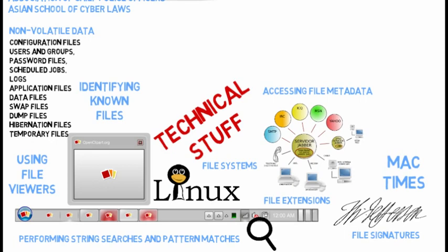Logs can include system events, audit records, application events, command history, and recently accessed files. Application files could be executables, scripts, documentation, configuration files, log files, history files, graphics, sounds, and icons. Data files are files that store information for applications — such as text files, word processing documents, spreadsheets, databases, audio files, and graphic files.